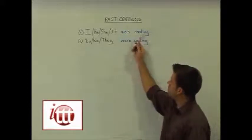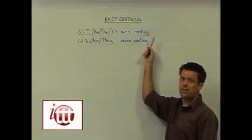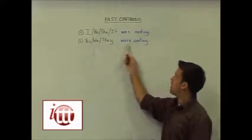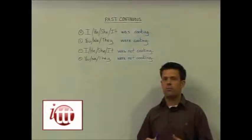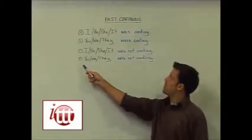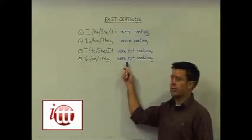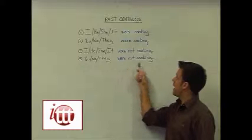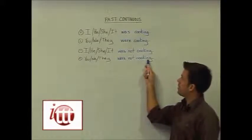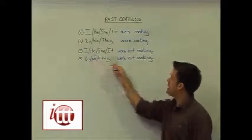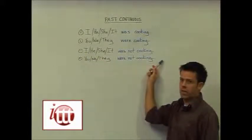This results in sentences such as 'He was cooking last night' or 'We were cooking last night.' In order to form the negative sentence for the past continuous, we add 'not' between the past form of the helping verb 'to be' and our main verb — for example, 'He was not cooking last night' and 'We were not cooking last night.'